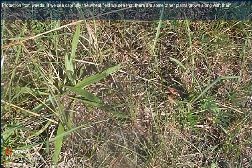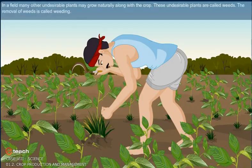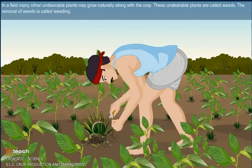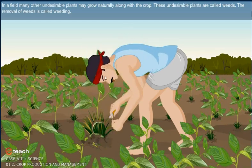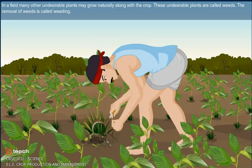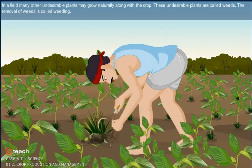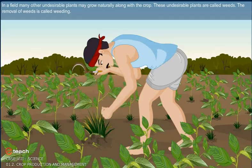Protection from weeds. If we look carefully at a field, we see that there are some other plants grown along with the crops. In a field, many other undesirable plants may grow naturally along with the crops. These undesirable plants are called weeds. The removal of weeds is called weeding.